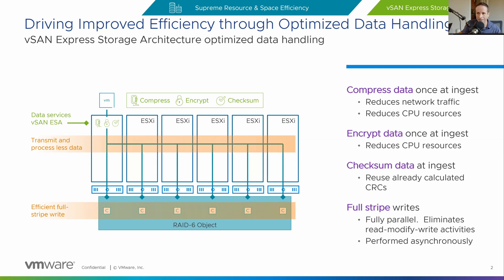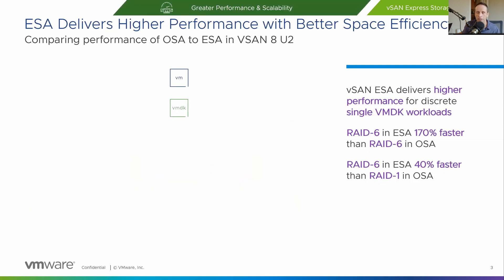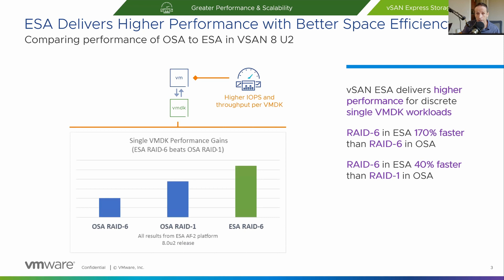I'm sure everybody's interested in what the actual result is. So let's look at what the performance of a single VMDK looks like on the Express Storage Architecture versus the original storage architecture. Here you can see on the right-hand side of the screen the effective performance capabilities of a RAID 6 erasure code running on vSAN Express Storage Architecture versus the two columns in blue that represent the performance capabilities of the original storage architecture. You're looking at 2.7 times the performance of a RAID 6 erasure code in the original storage architecture. That's just extraordinary in terms of storage performance and performance improvements.